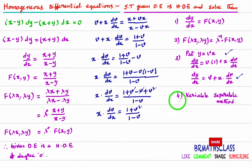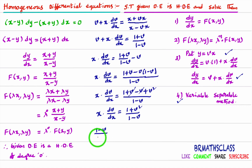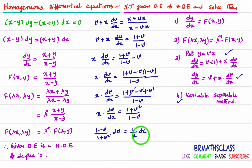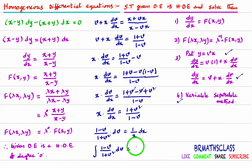To proceed further, we use the variable separable method. Taking (1 - v) to the left side and x to the right side, we get (1 - v)/(1 + v²) dv = (1/x) dx. All v terms with dv are on the left, and all x terms with dx are on the right. Once variables are separated, we integrate both sides.